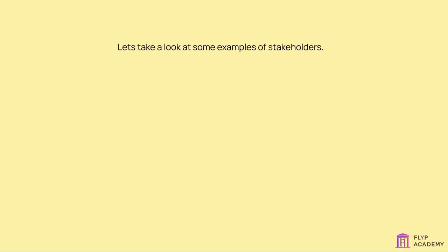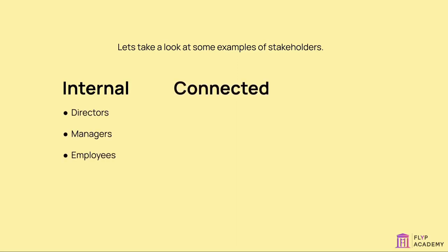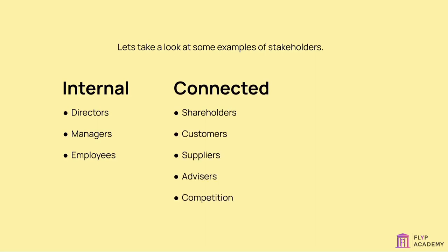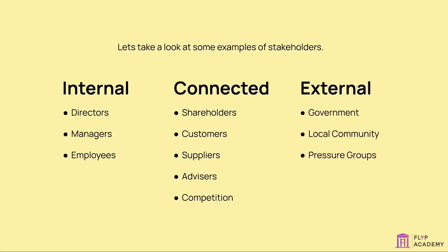Let's take a look at some examples of stakeholders. Most businesses have a variety of stakeholder groups, which can be broadly categorized as follows — internal: directors, managers, employees; connected: shareholders, customers, suppliers, advisors, competition; external: government, local community, pressure groups, media.